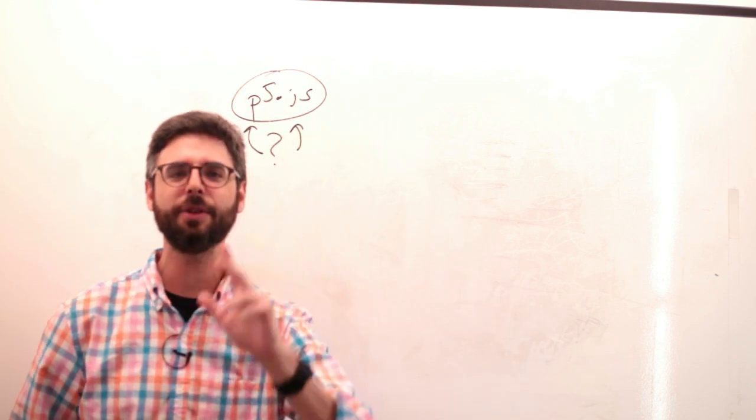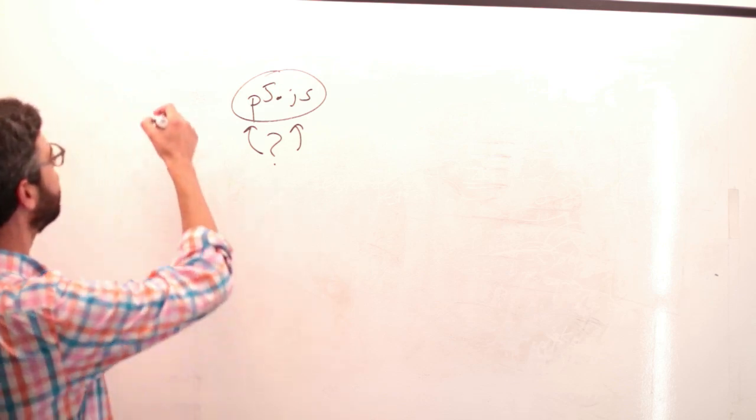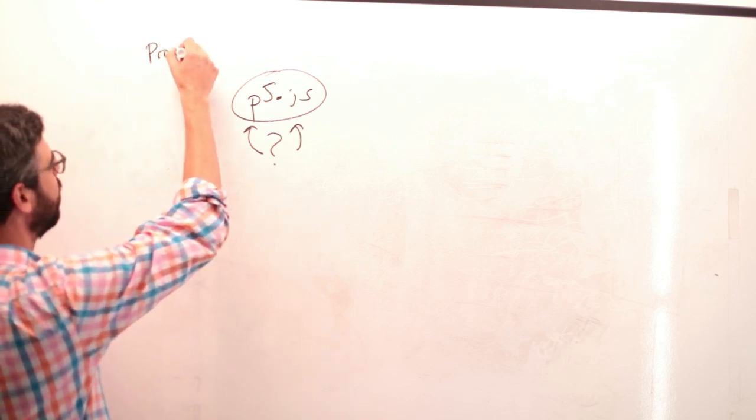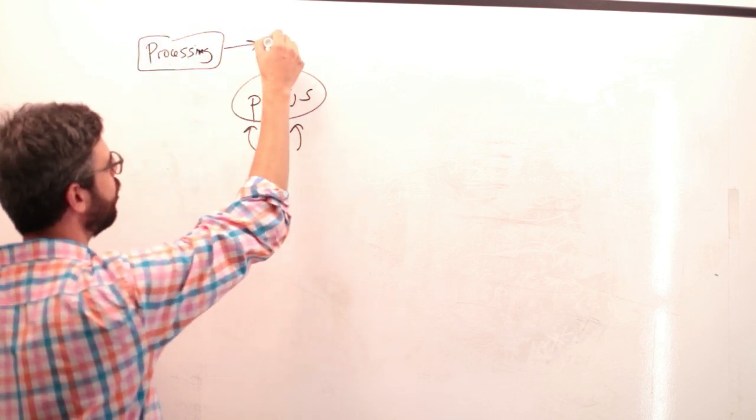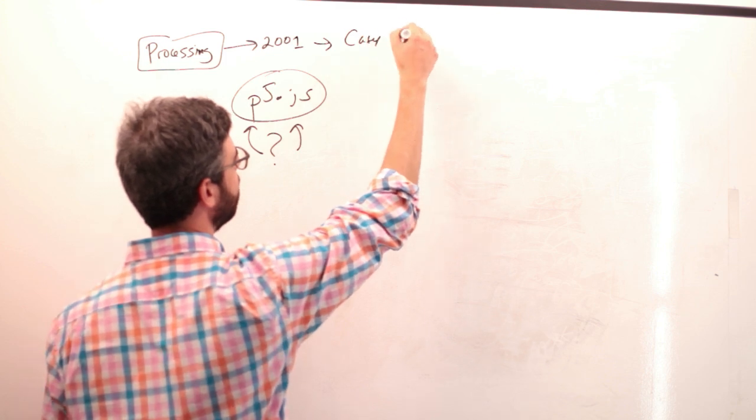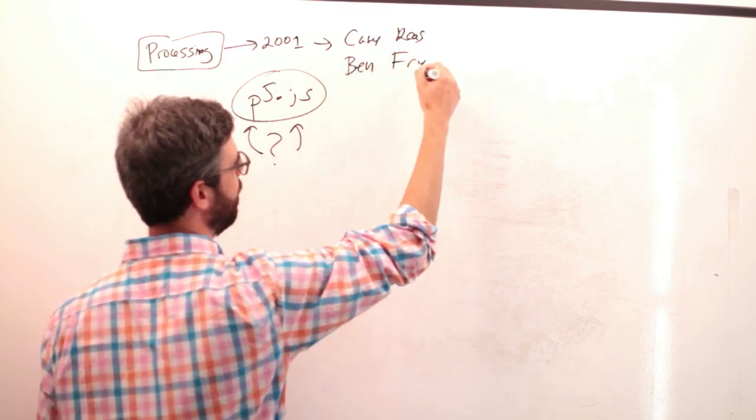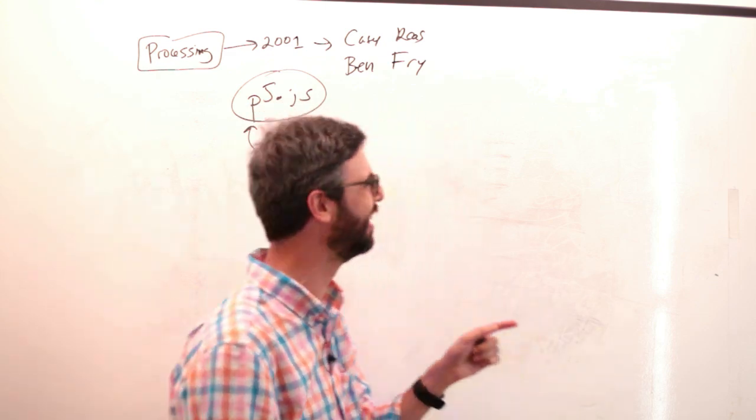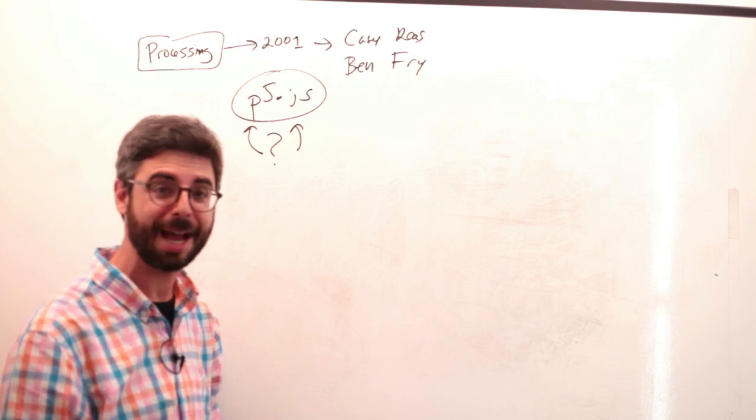So first let me give you a little context. Let's start with a little context. There is this thing called Processing. Processing is a project that started in 2001 by Casey Rees and Ben Fry. The two of them were students together at the MIT Media Lab.